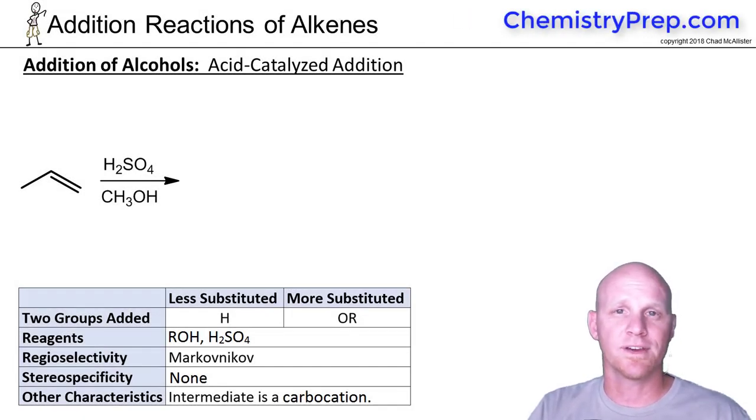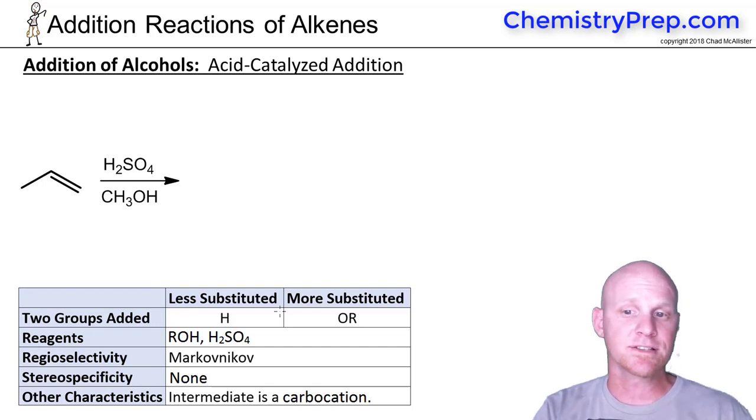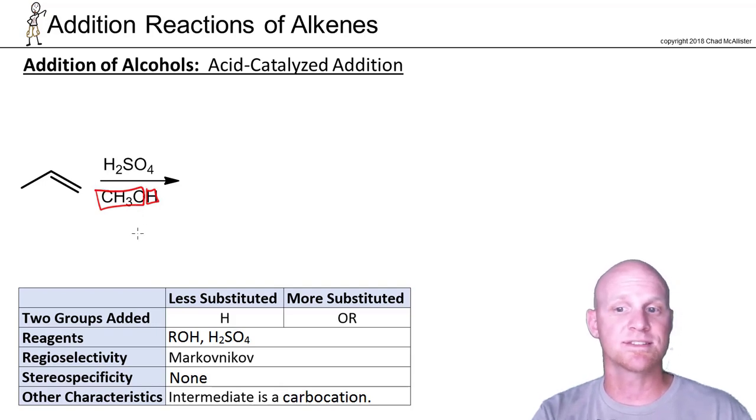So we've looked at adding water across the alkene. Now we'll look at adding an alcohol across the alkene, specifically in this case methanol. And we'll find out we're going to add H and OCH3 specifically across this alkene.